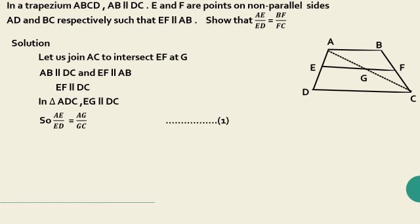Similarly, in triangle CAB, GF is parallel to AB. By basic proportionality theorem, CG by GA is equal to CF by FB. That is, AG by GC is equal to BF by FC. This is equation 2.